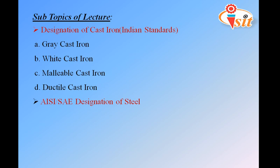In this lecture we are going to designate four types of cast iron: grey cast iron, white cast iron, malleable cast iron, and ductile cast iron. The last point will be the AISI — that is American Iron and Steel Institute — and SAE — that is Society of Automotive Engineers — designation of steel.